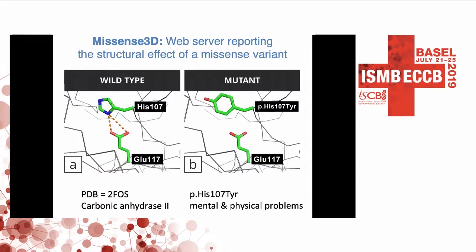MissSense 3D reports structural effects caused by missense variants. Here we have an example with carbonic anhydrase 2 and a variant HIS107 that changes to a tyrosine, which has been associated with a number of mental disorders and physical diseases. In the wild-type protein, GLU117 forms a salt bridge with histidine 107. However, upon changing to a tyrosine, that salt bridge is lost — a clear structural effect. We can therefore understand that this variant likely has some effect on function, consistent with its association with disease.